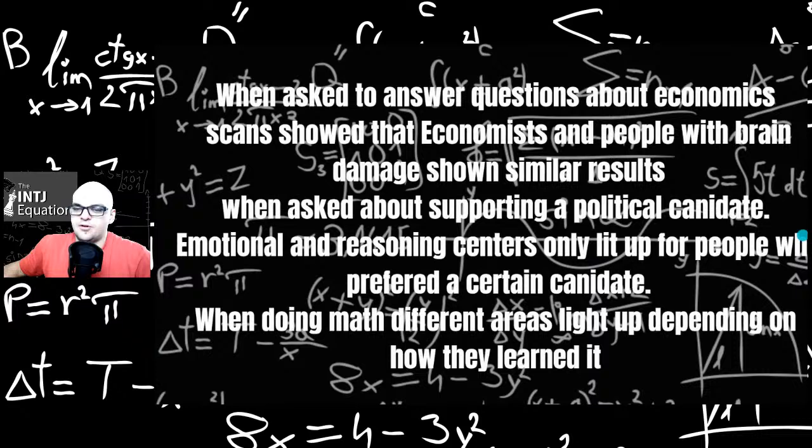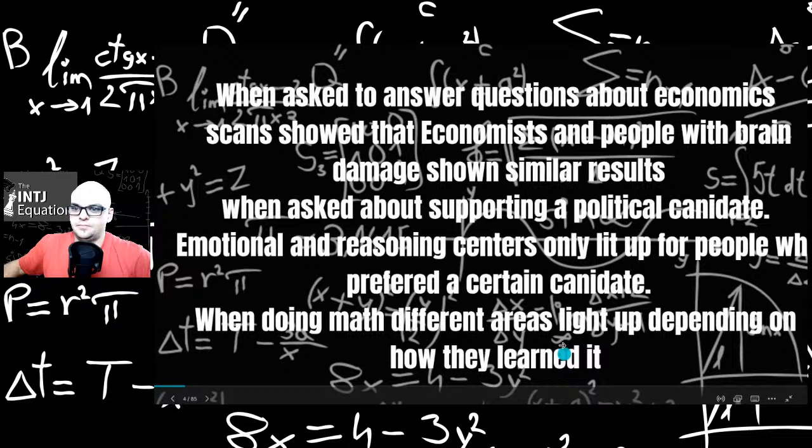When asked to answer questions about economics, scans showed that economists and people with brain damage show similar results. Not that economists are brain damaged, but hopefully they are and we're not going to go into a giant global recession. When asked about supporting a political candidate, emotional and reasoning centers only lit up for people who preferred a certain candidate. When doing math, different areas light up depending on how they learned it. He talks about how different civilizations like Japan learn it compared to France.